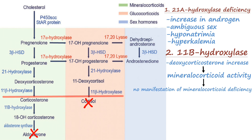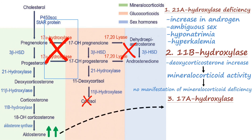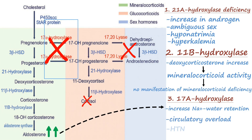The last deficiency is that of 17-alpha-hydroxylase. In this case, there will be no synthesis of cortisol and sex steroids, and there will be increased mineralocorticoid synthesis, since all intermediates are channeled toward aldosterone synthesis due to this block. This leads to increased mineralocorticoid activity, resulting in increased sodium and water retention, circulatory overload, and hypertension.